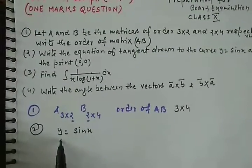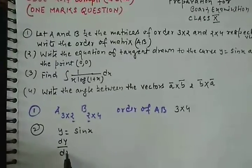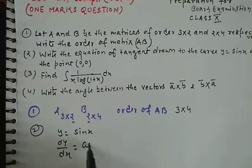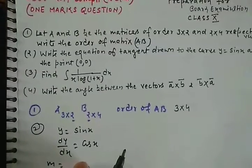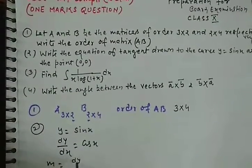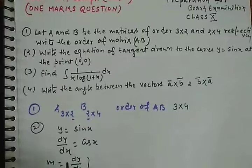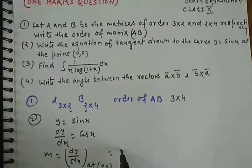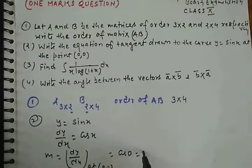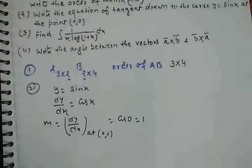To find out the slope, let us differentiate it. So what will be the dy/dx? Sin x derivative is cos x. Now let us find the slope at the point (0,0). Slope at (0,0) means dy/dx at (0,0). So cos 0 is simply 1, so slope 1 ho gaya.